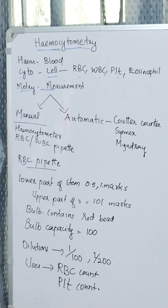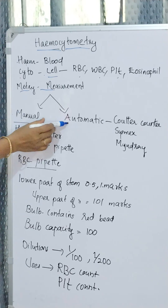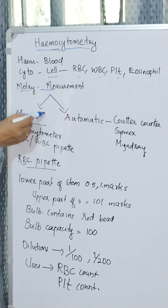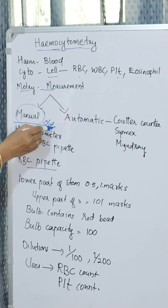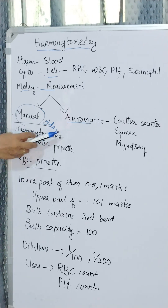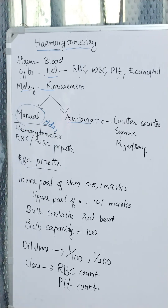Hemocytometry is of two types: manual and automatic. The manual method is much more time consuming, has a considerable degree of error, and is an older method. Now we are using automatic methods for cell counting, which are less time consuming, accurate, and reliable.